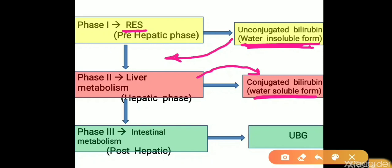Regarding Phase 3, that is the intestinal metabolism: this conjugated bilirubin reaches the intestine through the hepatobiliary duct, where it is converted into urobilinogen. So bilirubin formation occurs in the reticuloendothelial system producing unconjugated bilirubin; this is transported to the liver with the help of albumin and converted into conjugated bilirubin, which then travels to the intestine and is converted into urobilinogen.